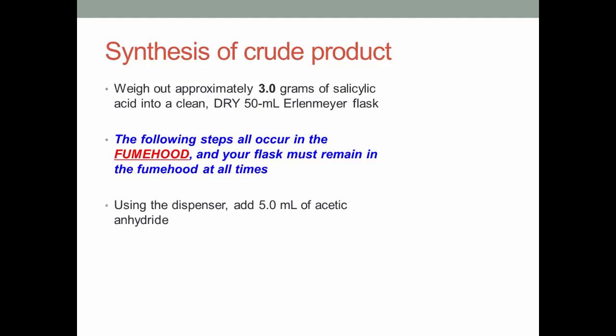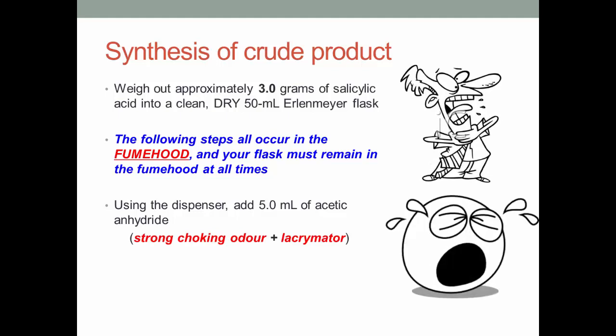Using the dispenser, add 5 ml of acetic anhydride. Acetic anhydride has a strong choking odor and is a lacrimator, which means it causes tearing. This is why these steps must occur in the fume hood. Then, wearing gloves, add 10 drops of 18 molar sulfuric acid and swirl the flask gently.